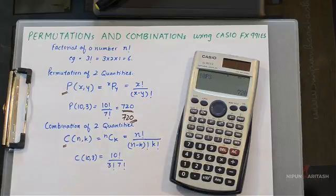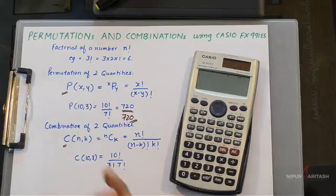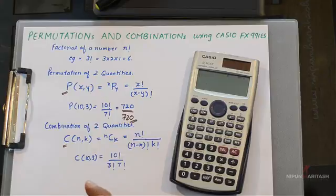However, the second way is much faster. And then you can directly find the combination of two quantities. And let's find out combination of 10, 3.